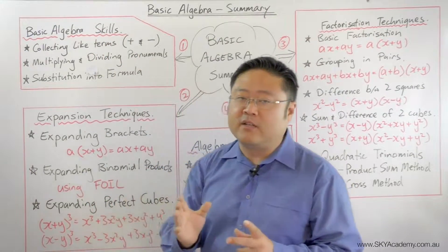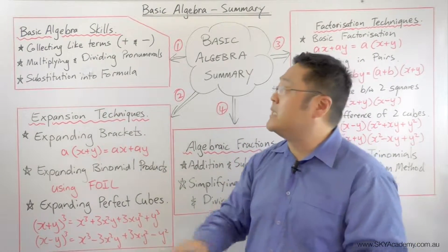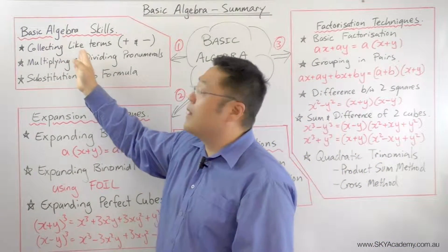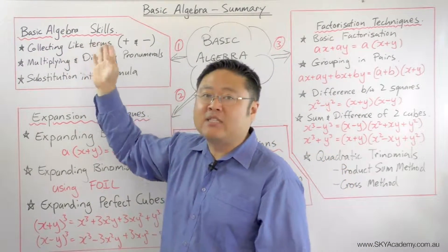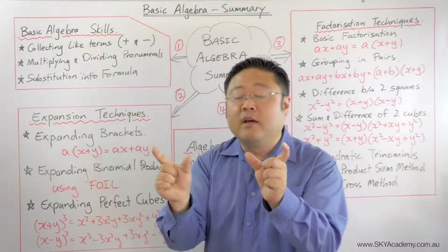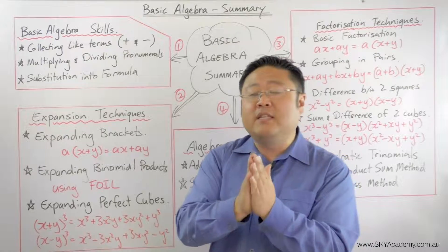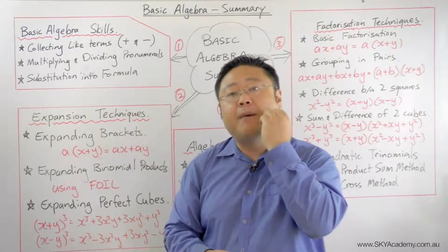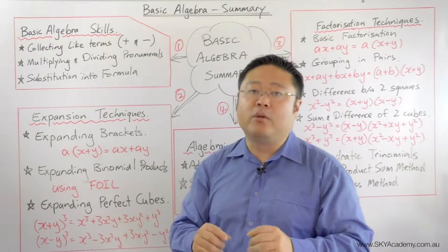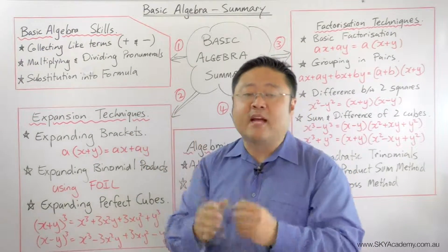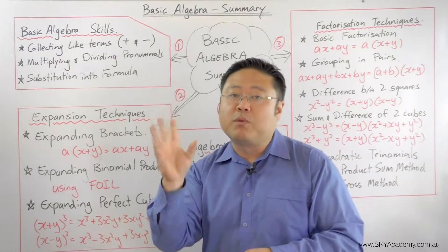We started off with looking at basic algebra skills. When it comes to addition and subtraction, we needed to understand that in order to add and subtract algebraic terms, you need to collect terms that are like. You can only add apples with apples and oranges with oranges. So like pronumerals can be added together; unlike pronumerals stay separate within the algebraic expression.